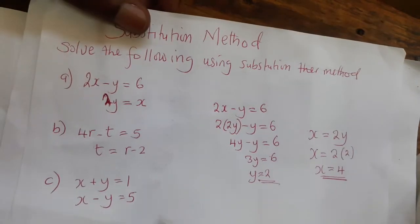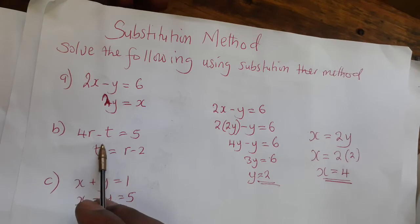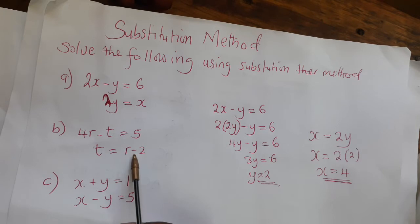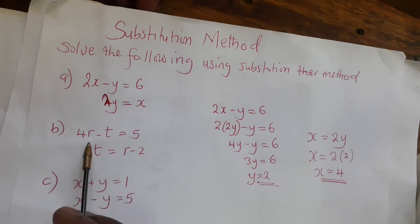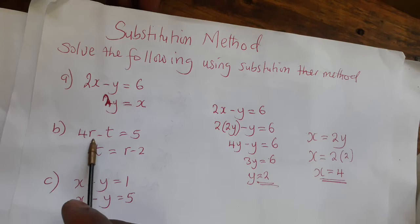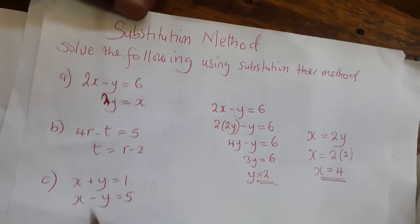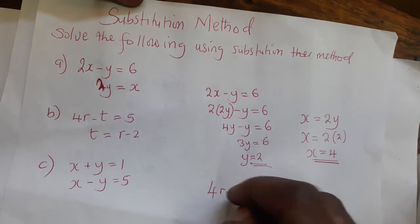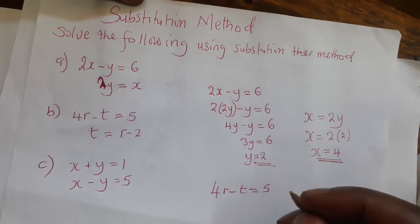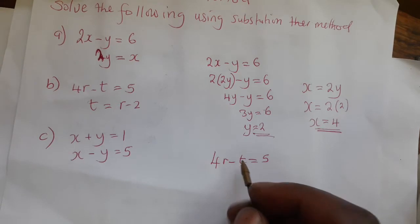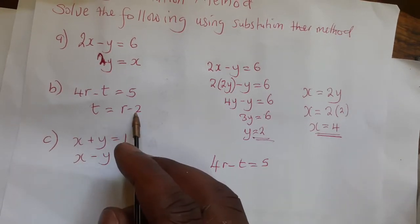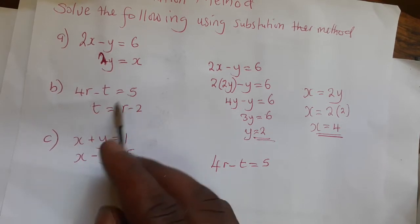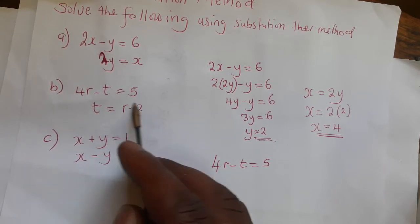We come to the second problem. We'll do the same thing here. T is the subject of the formula, so we'll substitute into the first equation. The first equation is 4r minus t equals 5.